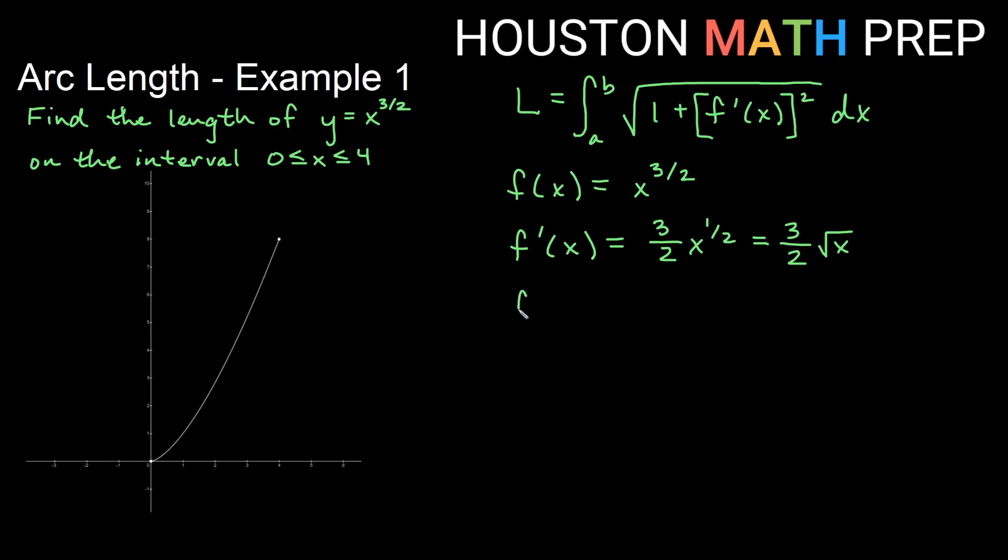Now in the formula f prime is squared, so we go ahead and find f prime of x squared. If I square the 3 halves, I get 9 on top, 4 on bottom, and then square root squared would be x. So we have 9 fourths x for our f prime squared. Our length on this function from x equals 0 to x equals 4 is going to be the integral from 0 to 4 of square root of 1 plus 9 fourths x dx.